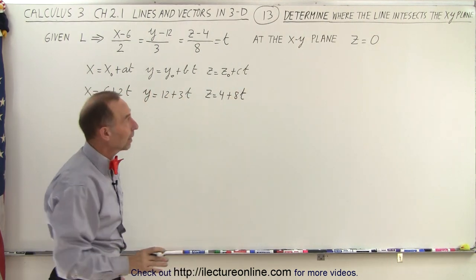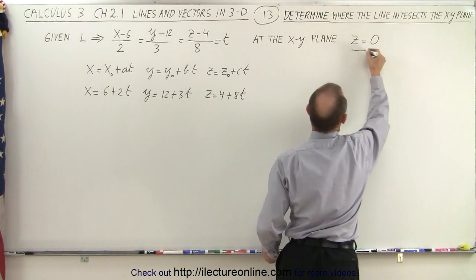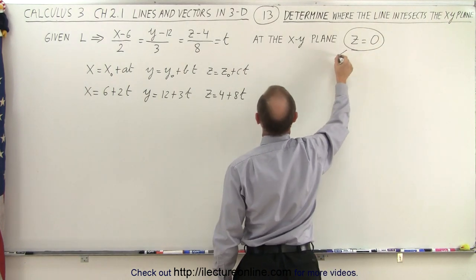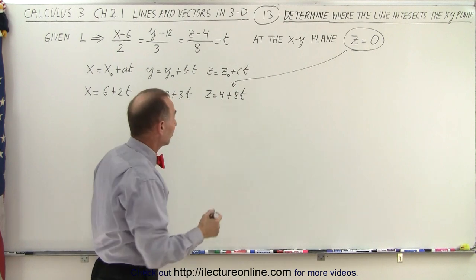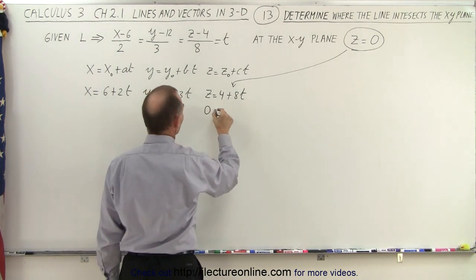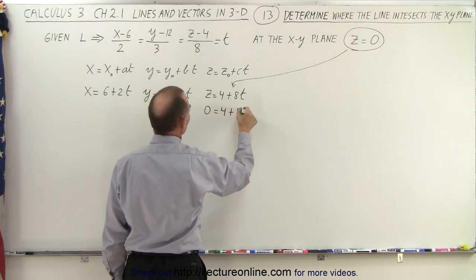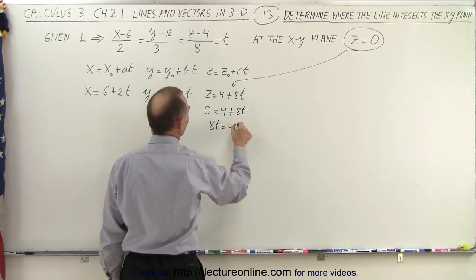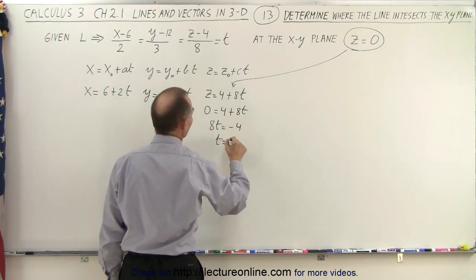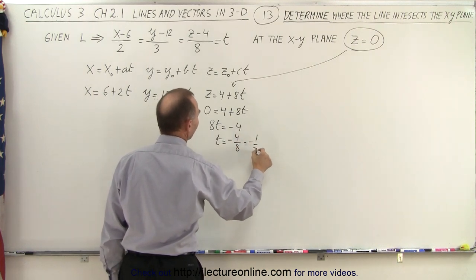All right, and then we realize that z is equal to 0. So we're going to apply that to this parametric equation. We get 0 is equal to 4 plus 8t, which means that 8t is equal to minus 4, or t is equal to minus 4 over 8, which is minus 1 half.